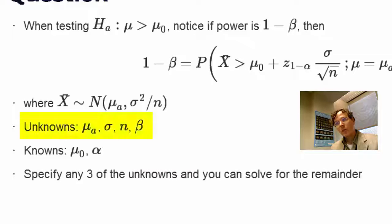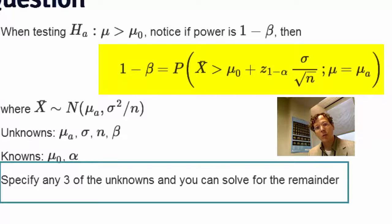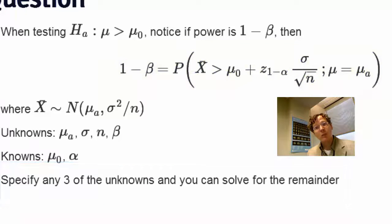So given these four unknowns and our two knowns, this is simply an equation. If you specify any three, you can solve for the fourth. So if you know the alternative mean that you'd like to detect, a sigma that you're willing to assume, the n that you want, then you can solve for power like we've done previously.